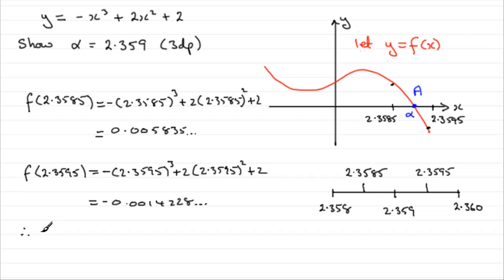Therefore, alpha equals 2.359 to three decimal places, since there has been a change in sign.